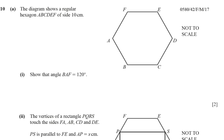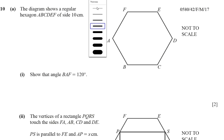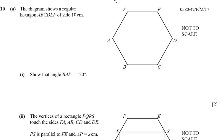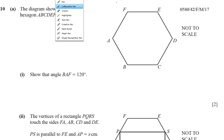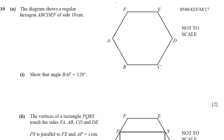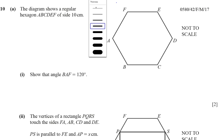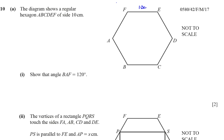Okay, question number 10 part A — this is a question I've had many requests to answer, so I'm going to go through it from beginning to end. In this question we're told that we have a regular hexagon ABCDEF with sides of 10 centimeters. Regular means all the sides are the same and all the angles are the same.